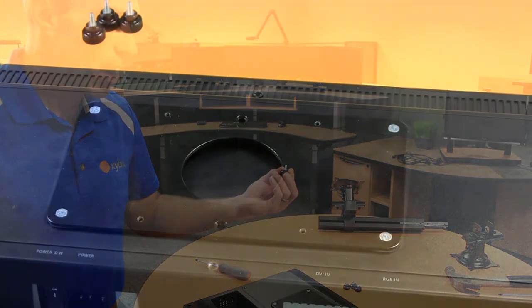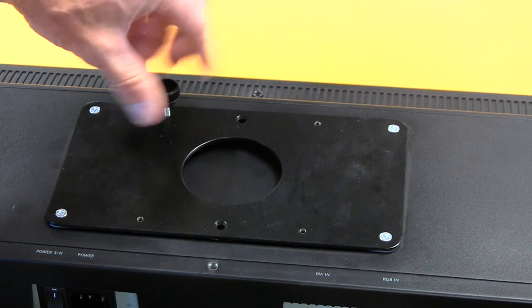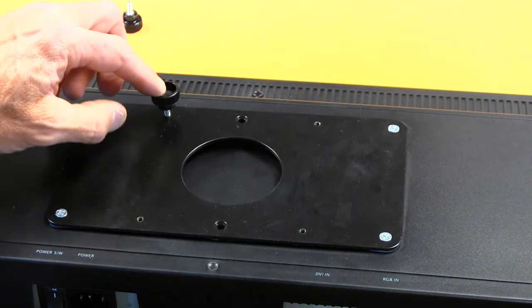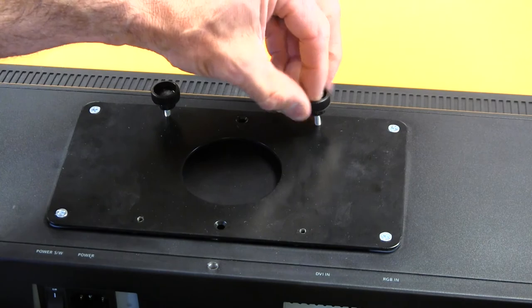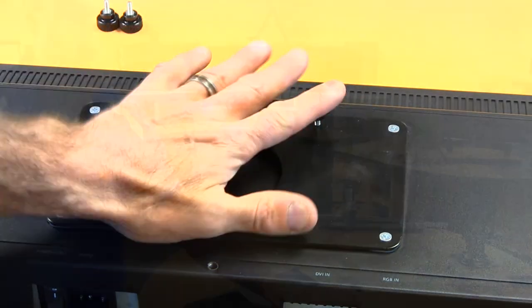So with our Zybex mounting system, all you need to do is you can pre-prep these screws. So you're just going to take and screw your M4 thumb screw into the two upper holes. So you want to have it on the top of the monitor. And this way you're prepped for mounting.